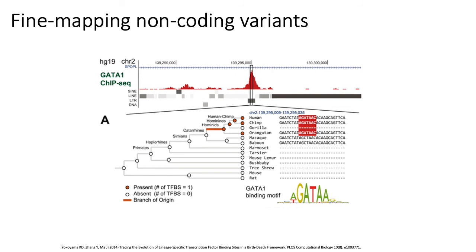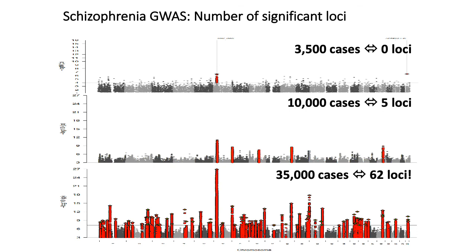Generally, fine mapping is the hard part of GWAS studies. Because most variants associated with traits and diseases in humans are in non-coding regions of the genome, all of those assays we looked at in the epigenomics, TF, and Hi-C lectures would be used here to identify variants in interesting regions where something is happening — whether physical interactions through Hi-C, regulatory, or epigenomic data — to figure out which variants are most likely to be functional in this region and therefore potentially causal.